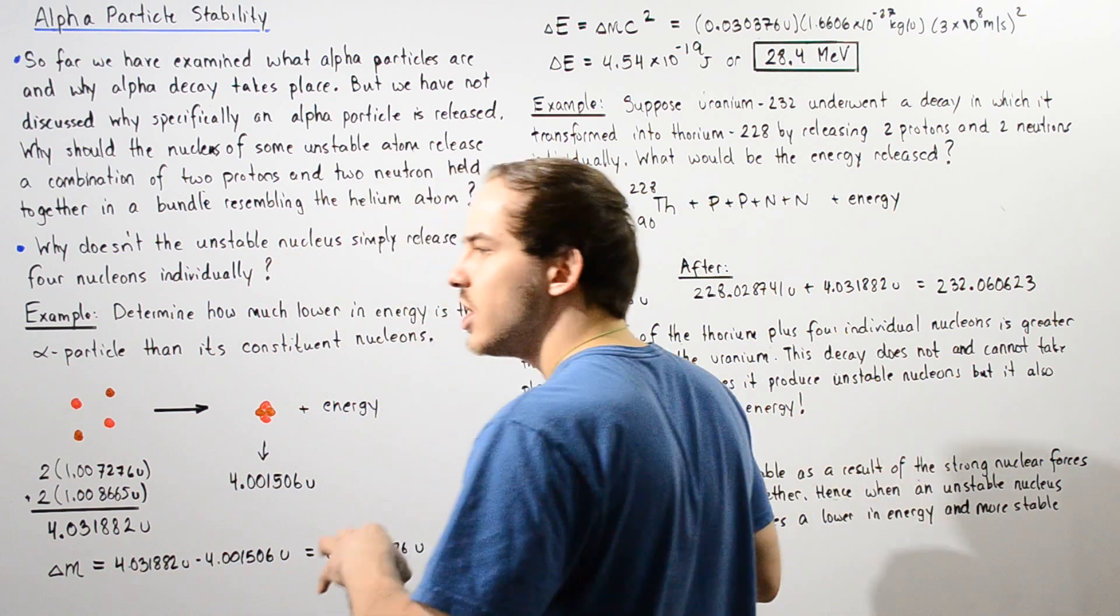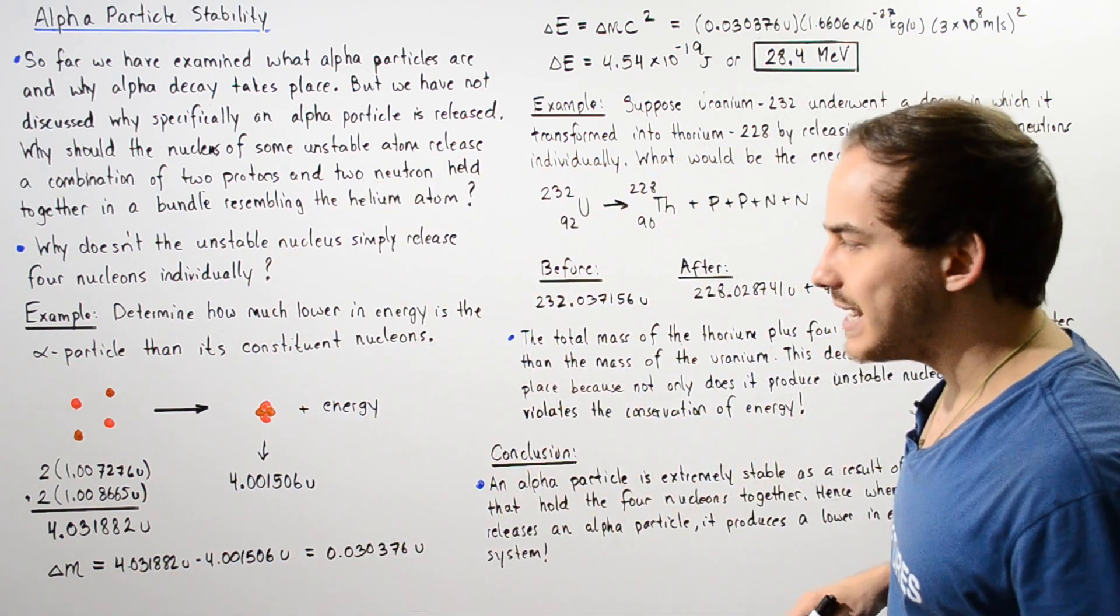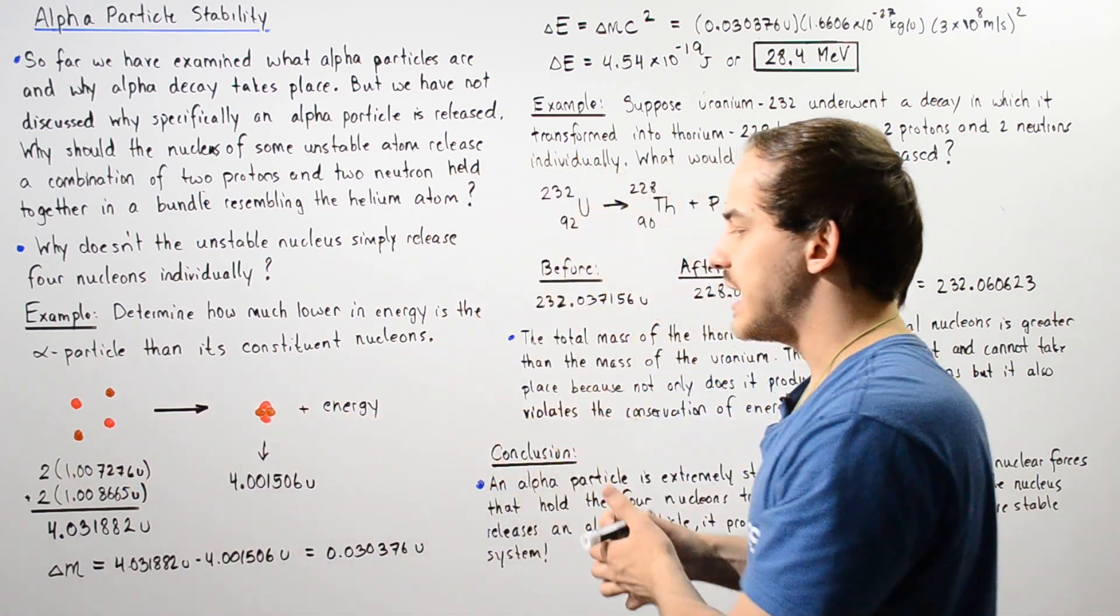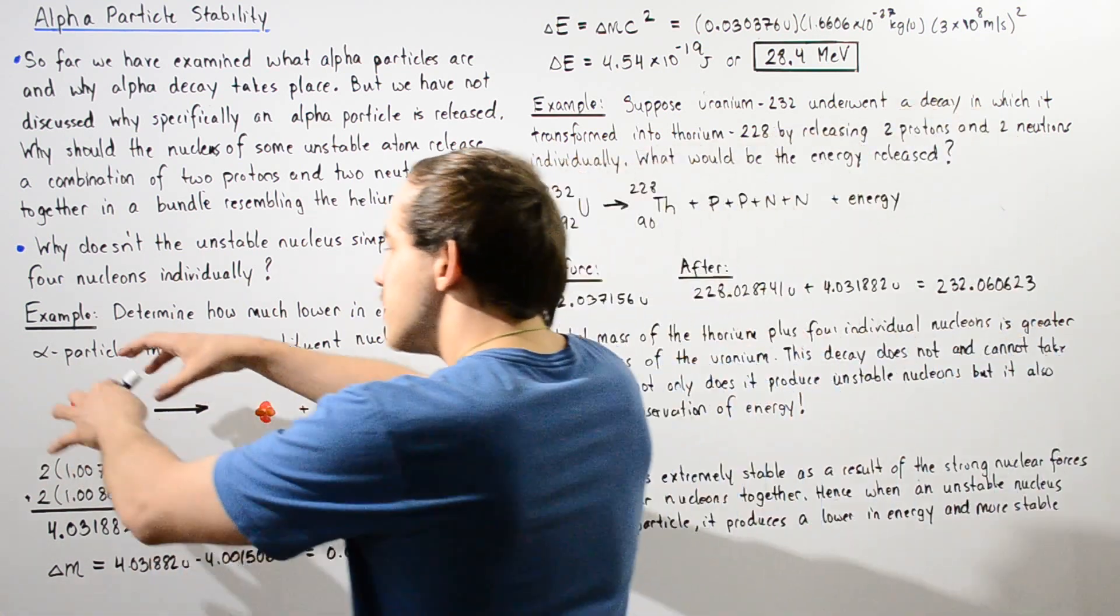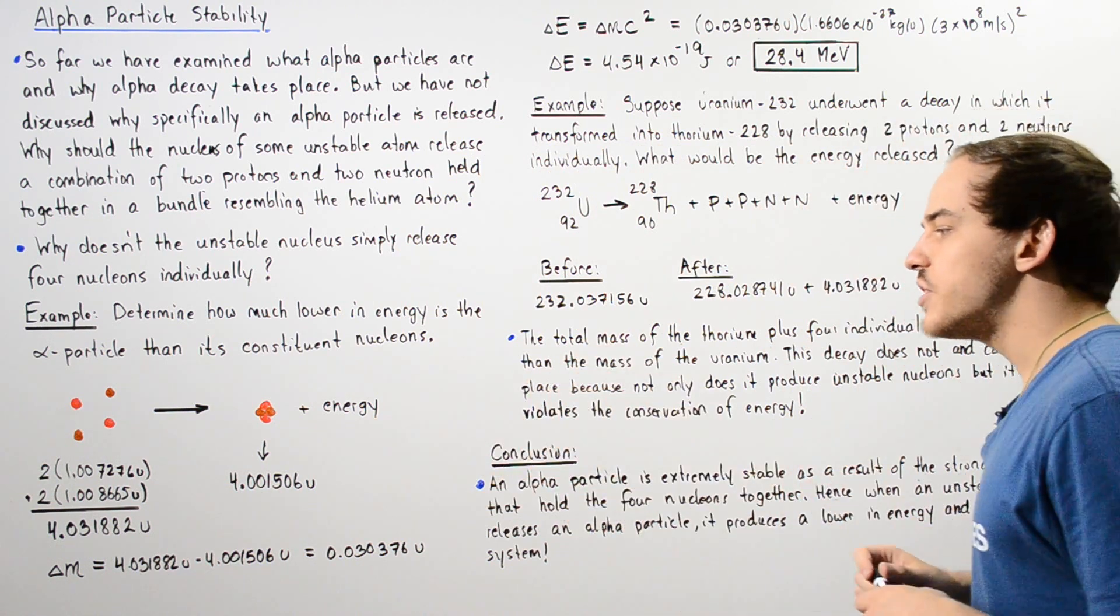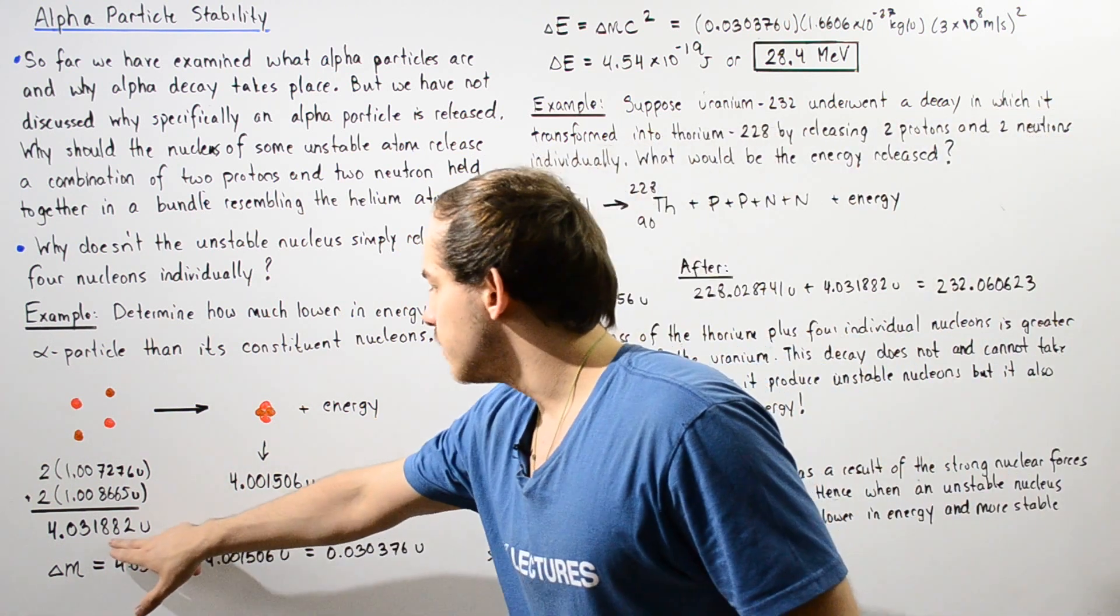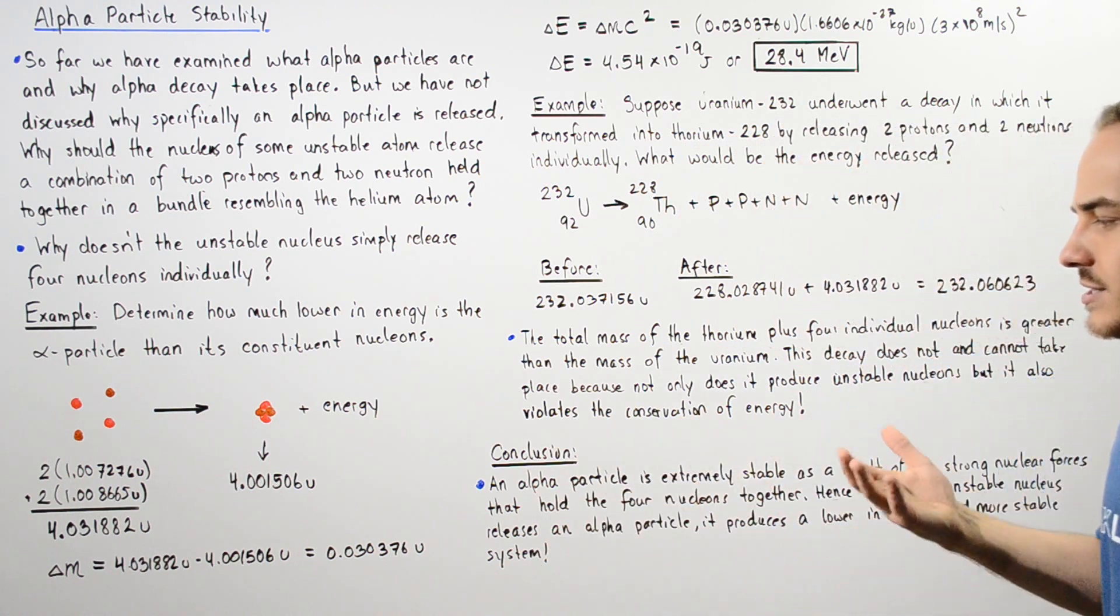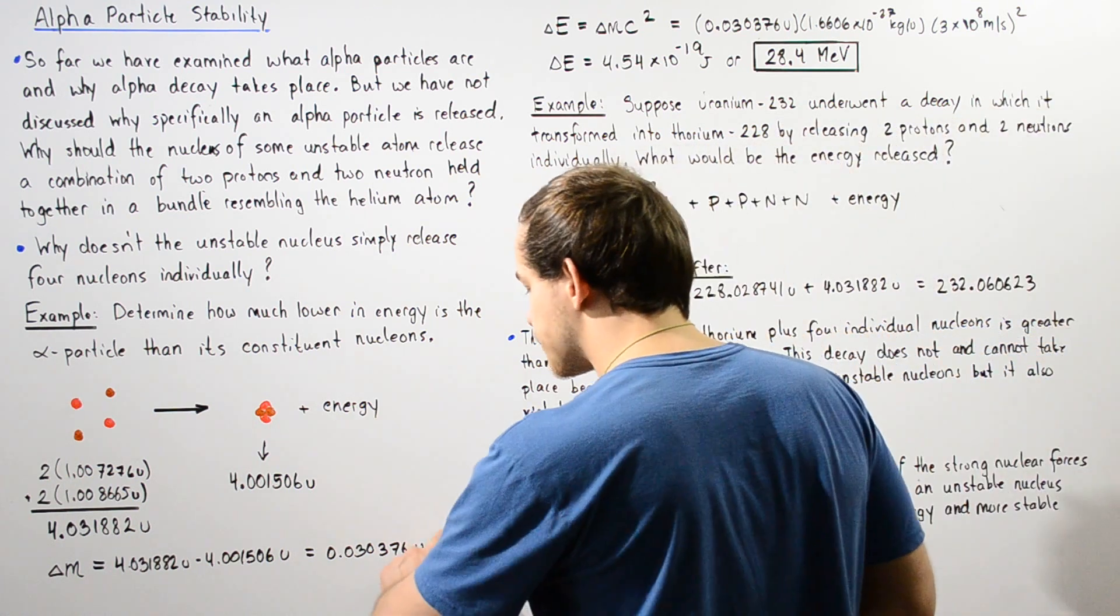So now we can calculate what the change in mass is. What is the decrease in mass when this reaction takes place? When we combine the four nucleons to form our bundle, we call the alpha particle. So we simply subtract and we get 0.03376U Unified Atomic Mass Units.